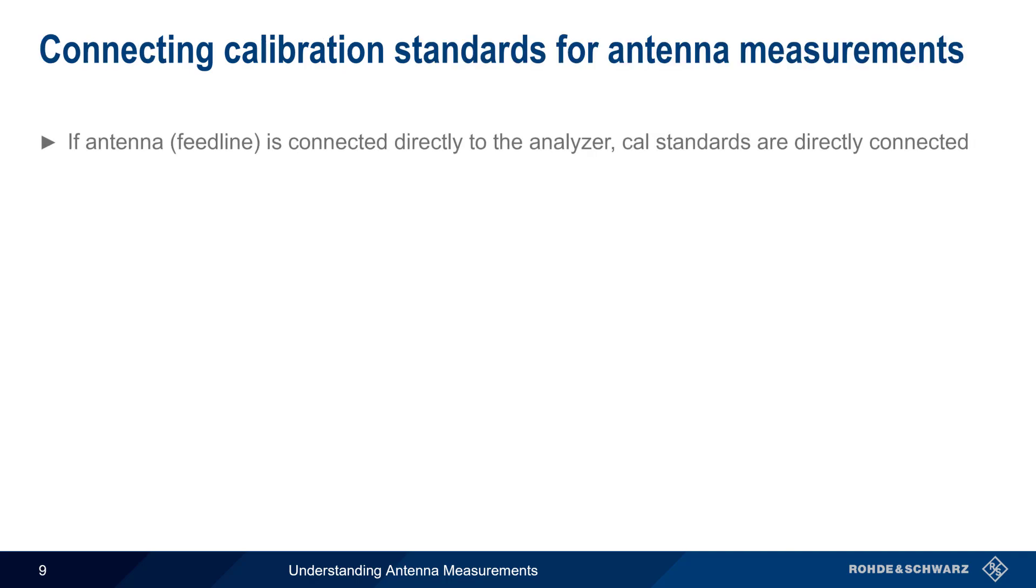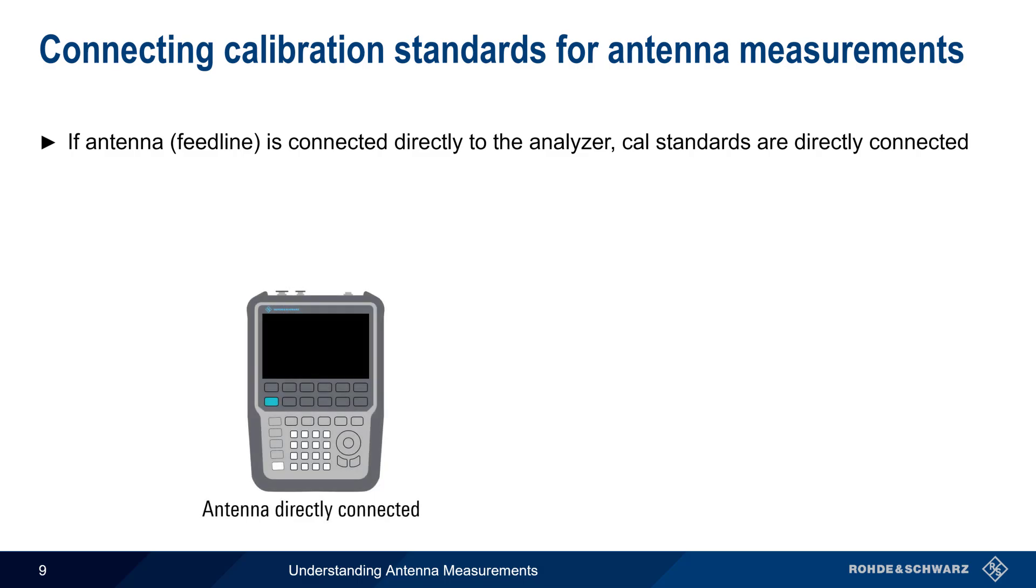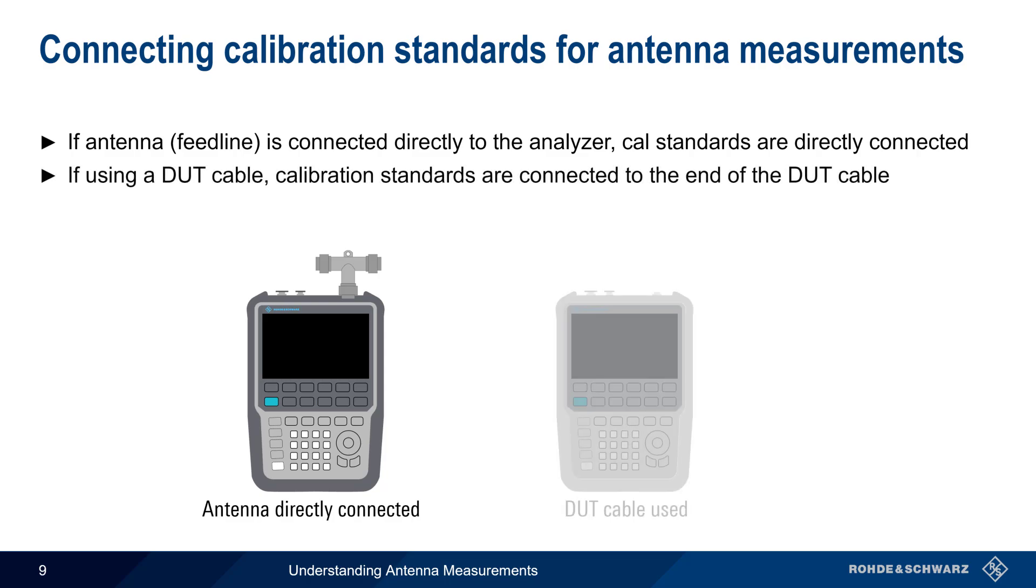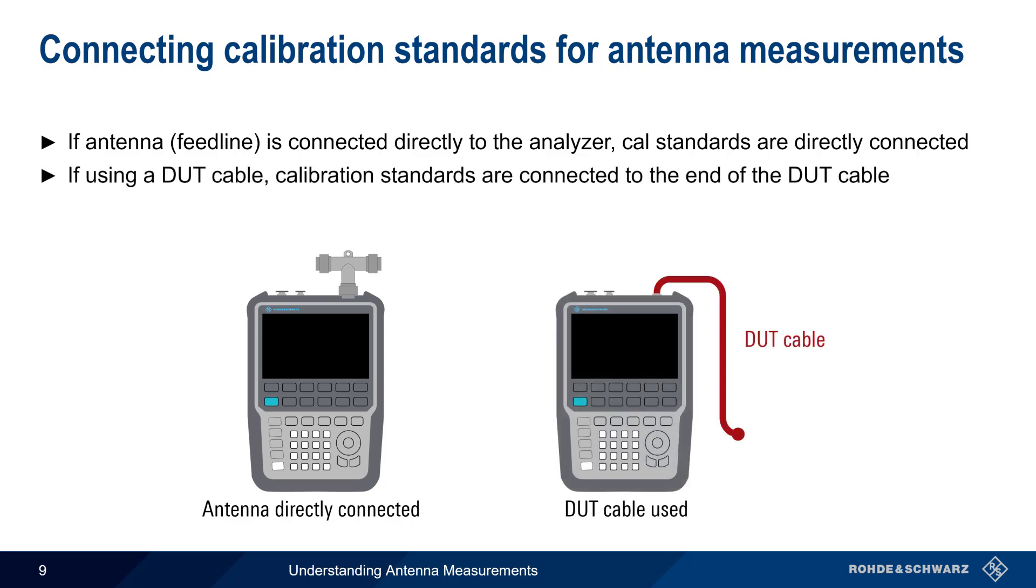Note that if the antenna under test or the attached feed line will be connected directly to the analyzer port, then the calibration standards should also be attached directly to this port. If a DUT cable is used, then the calibration standards should be attached to the end of the DUT cable. Doing this moves the calibration plane to the end of the DUT cable, and thus removes the DUT cable from the measurement results.